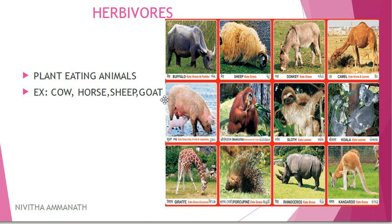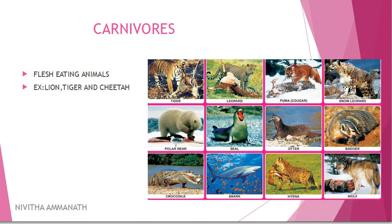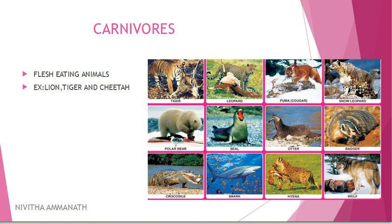Next is the flesh-eating animals. Lion, tiger, cheetah — what do they do? They kill other animals and eat their flesh. These are carnivores — flesh-eating animals. Examples: lion, tiger, cheetah.